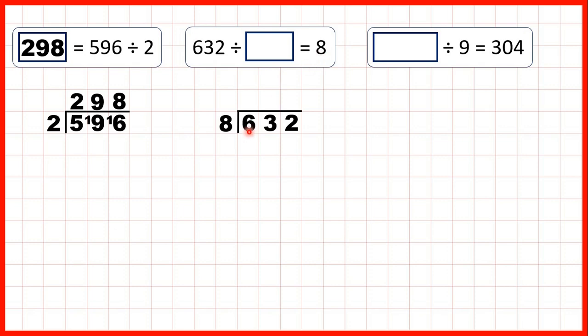If we look at the first digit, 6 is less than 8. So, what we can do is take the first two digits together and divide 63 by 8.